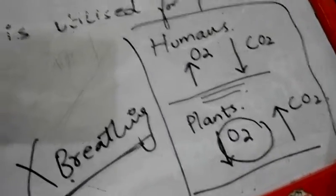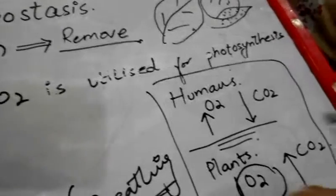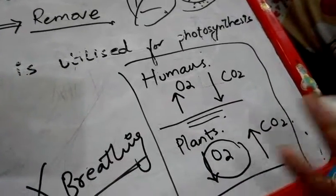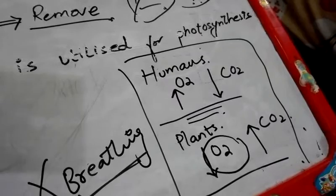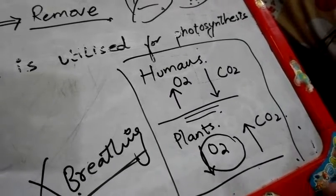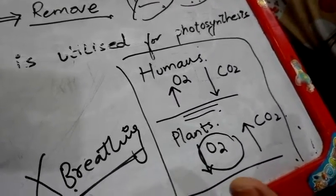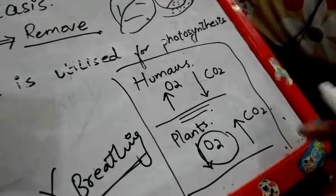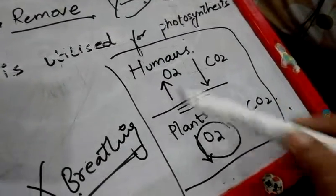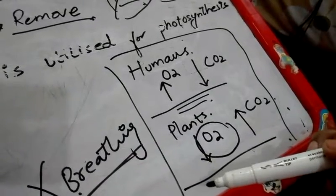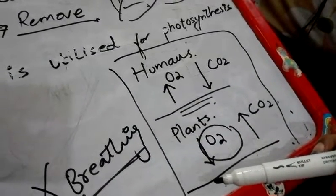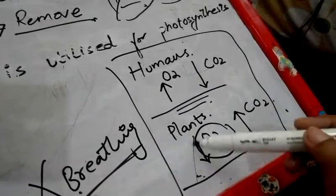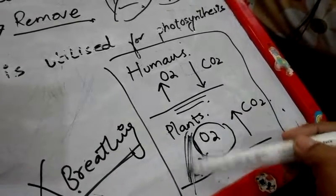This was all about excretion and removal — what is removed during the day, what is removed during the night, what is utilized and what is produced. I hope you have understood the basic terms: excretion at night time and how humans and plants are interrelated in terms of gaseous exchange. Thank you very much. Protect yourself and your family from pandemic COVID-19, and learn these topics at home.